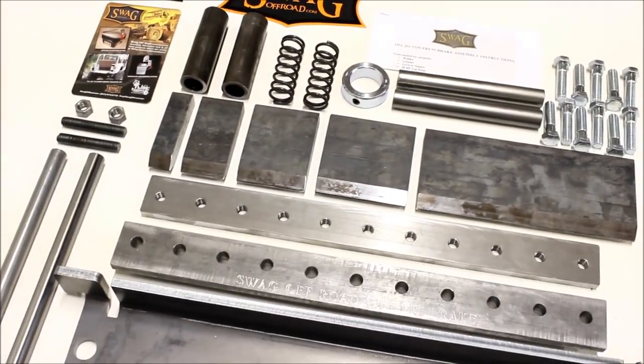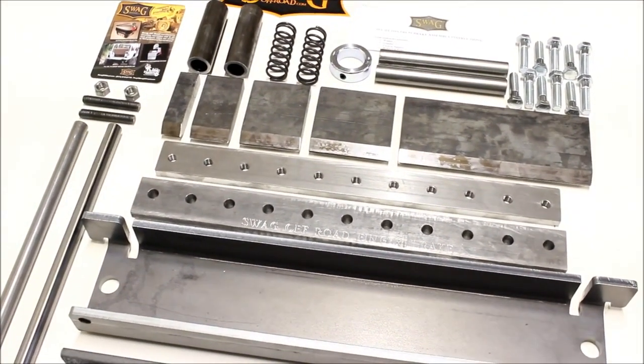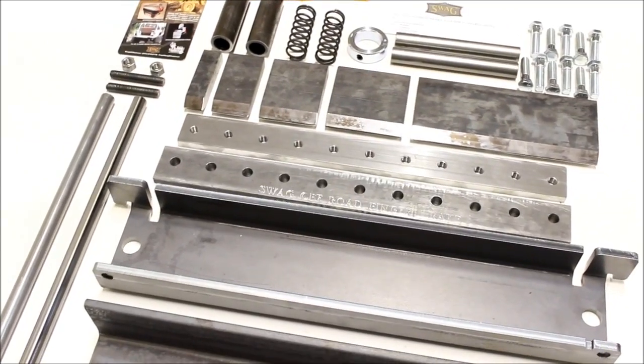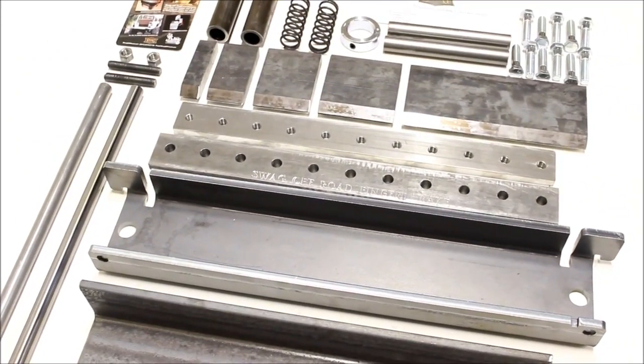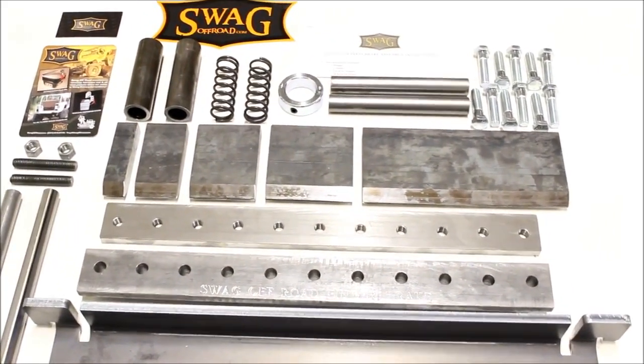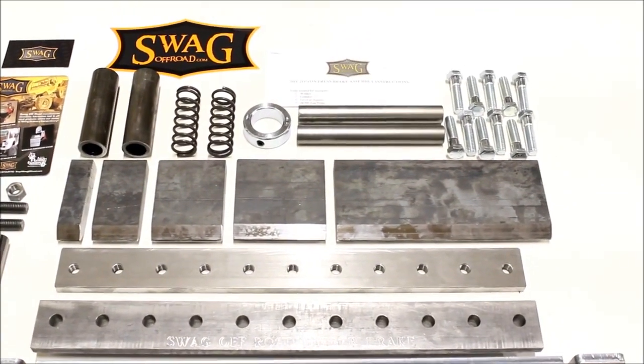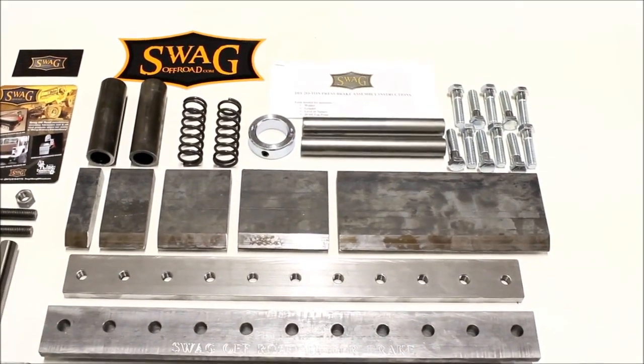What separates the finger brake from our standard press brake kit are these five fingers machined out of three-quarter inch wide, four inch tall flat bar in five different sizes: one inch, two inch, three inch, four inch, and nine and a half inches wide.